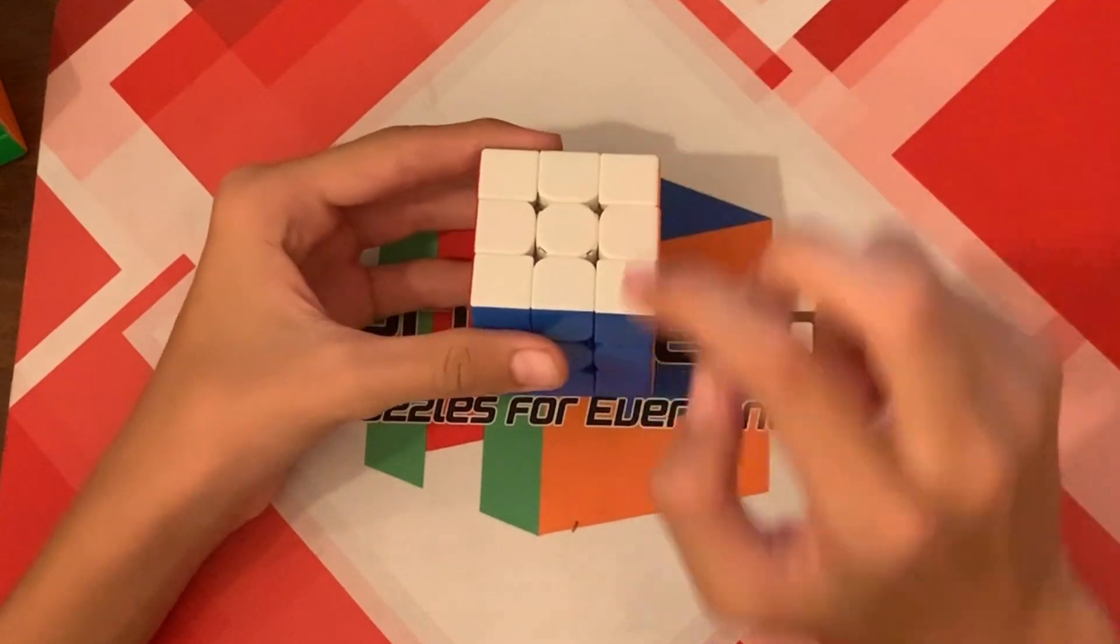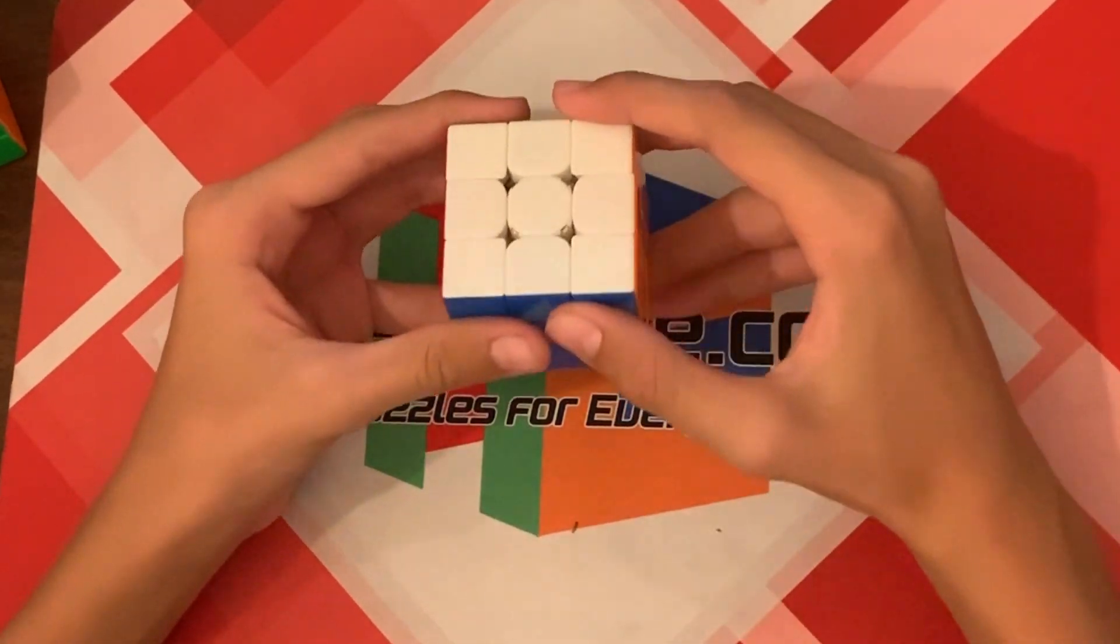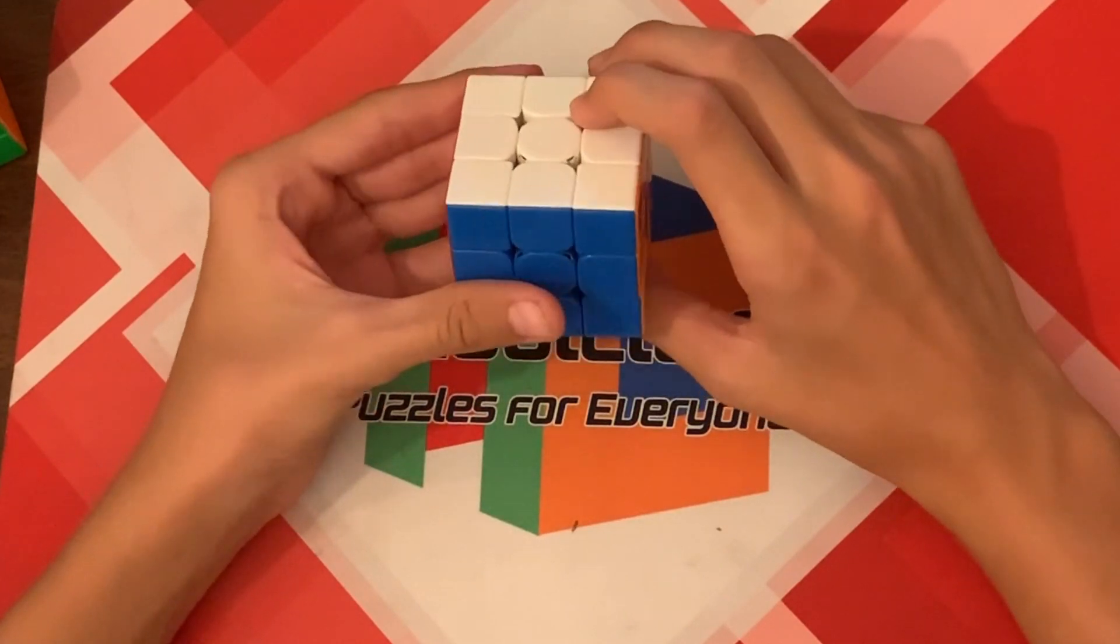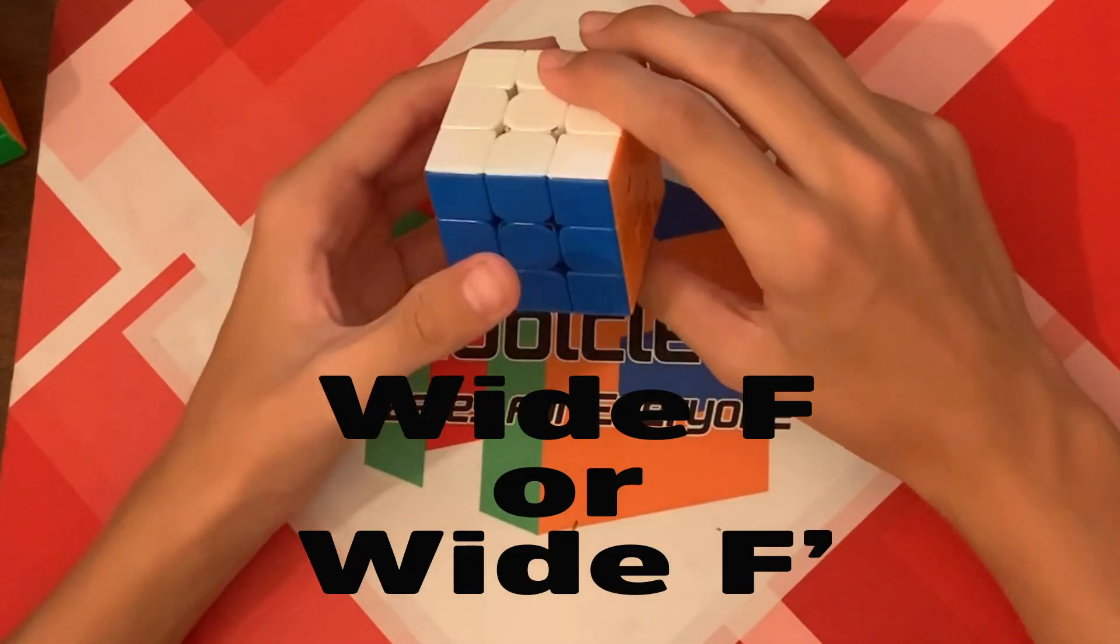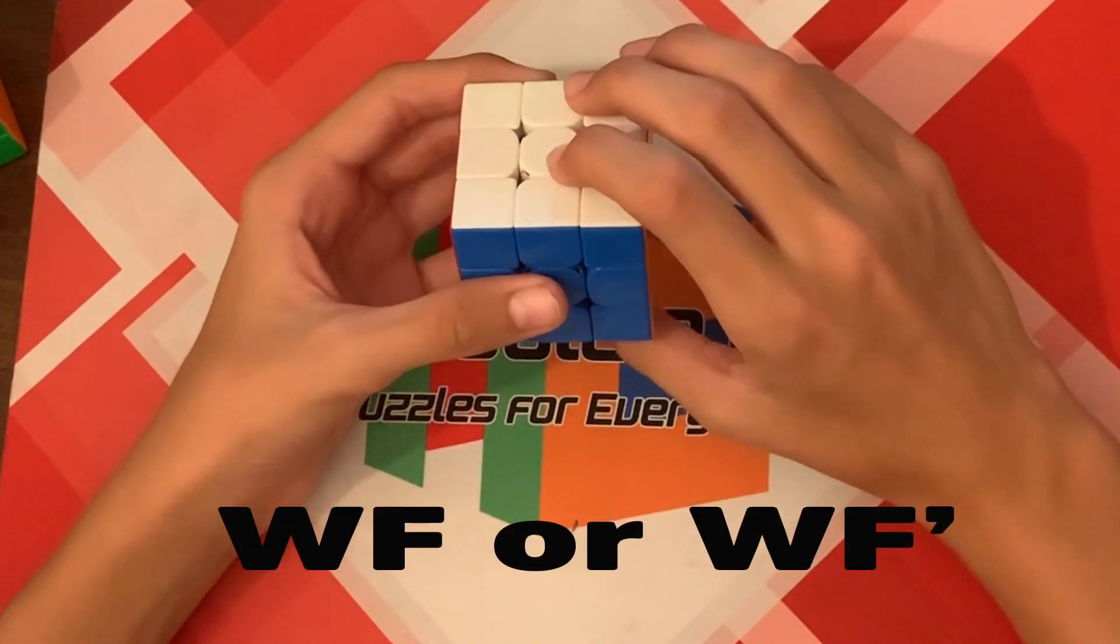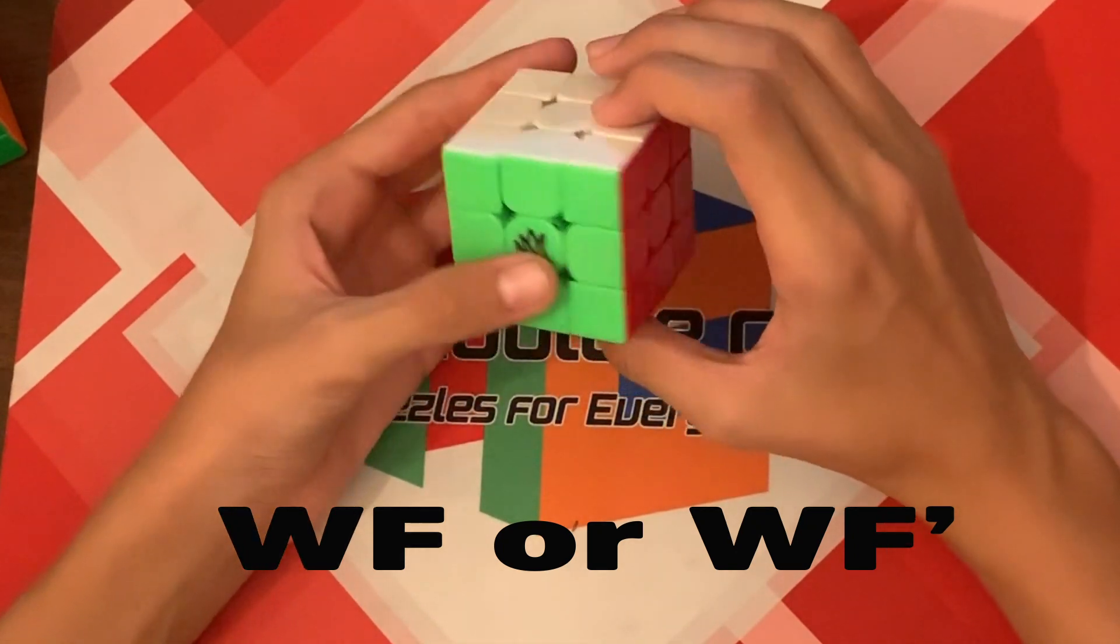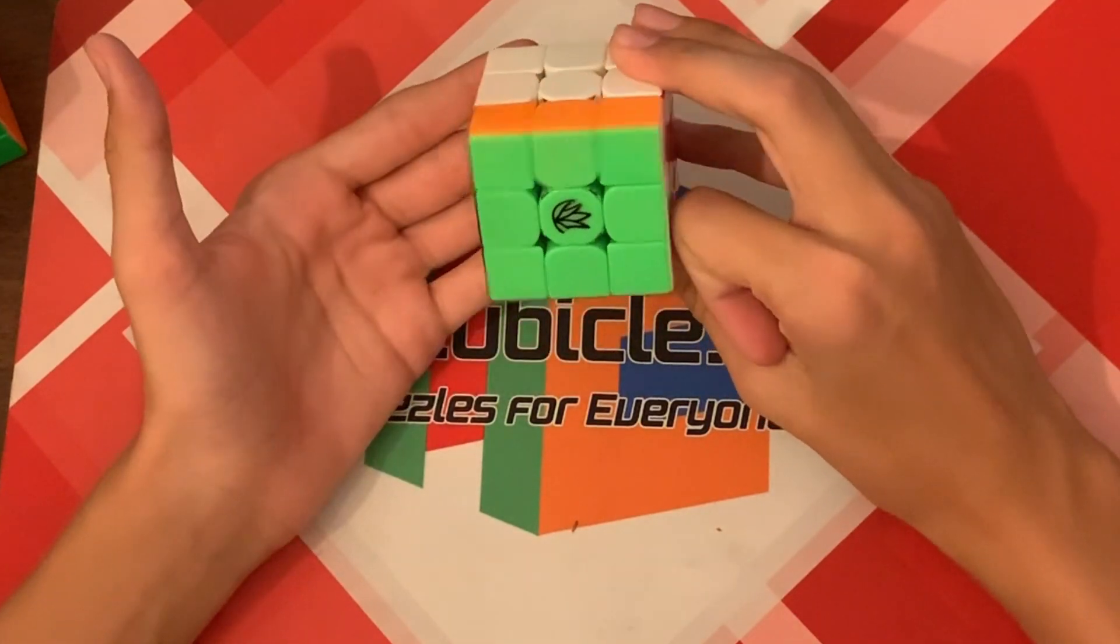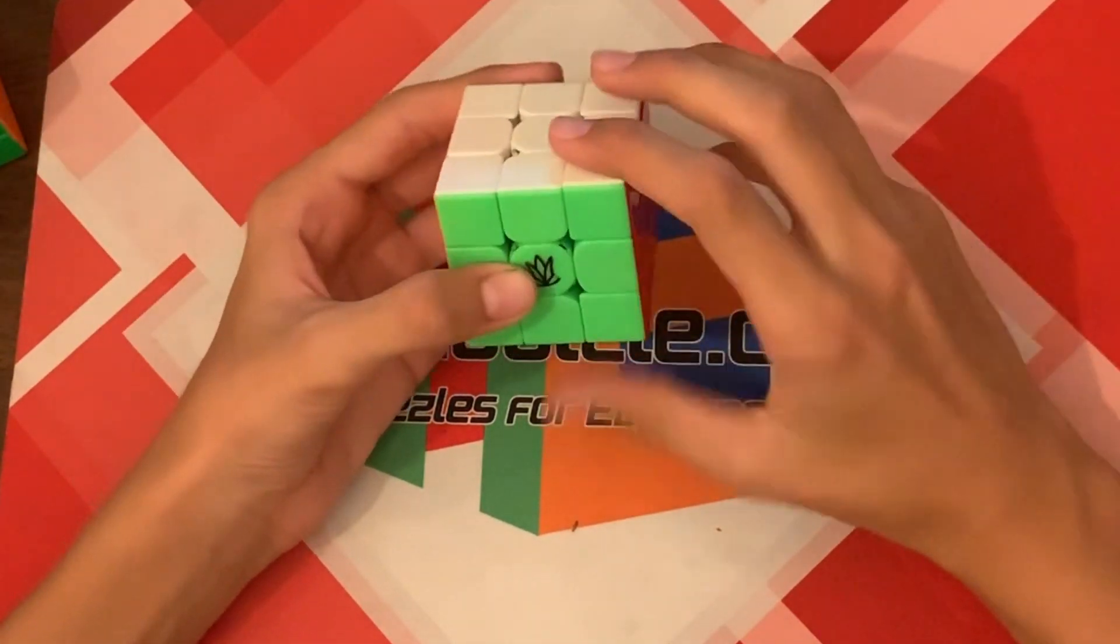Now, before we begin, there are two new moves that you're going to need to know, but they are very, very simple. The first one is called wide F and wide F prime. It follows the same principles as F. So if I have green in front and white on top, an F is like an F movement. It's just an F, clockwise.